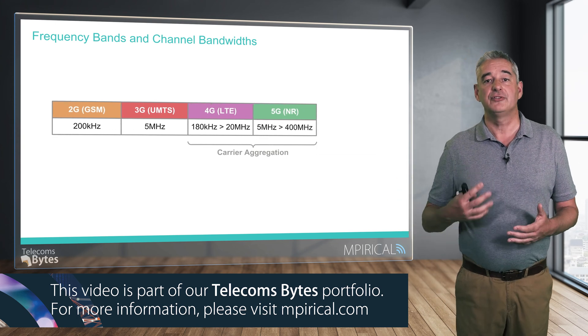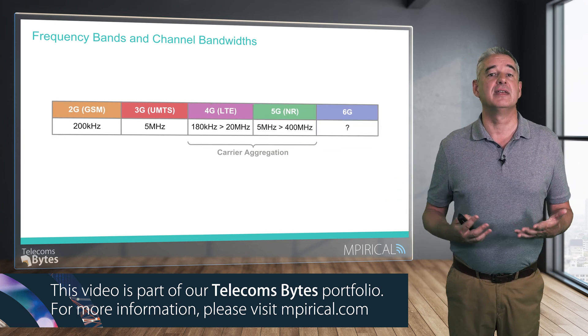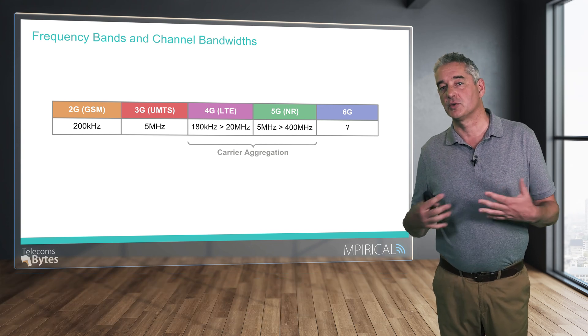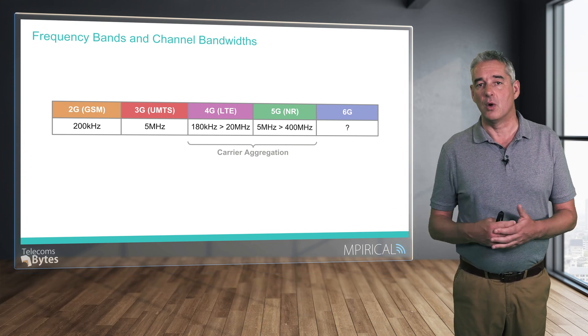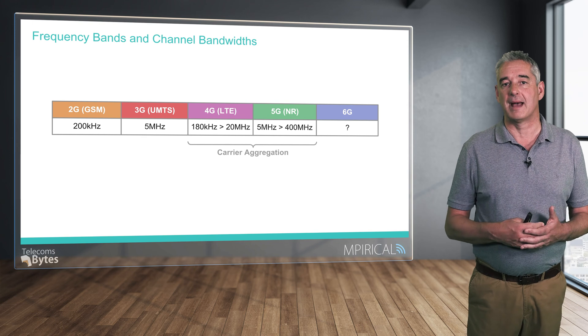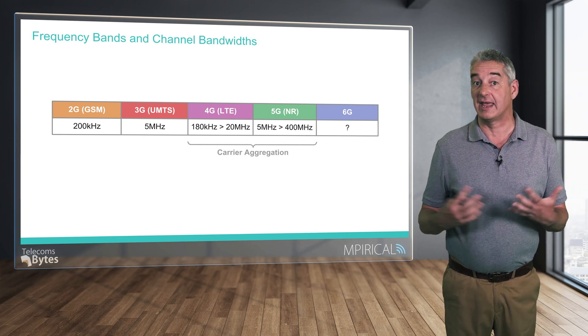So is this principle going to be extended into 6G, the mobile technology of the 2030s? And if so, what will be the frequency bands and the channel bandwidths in operation then?